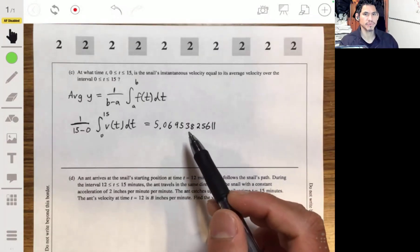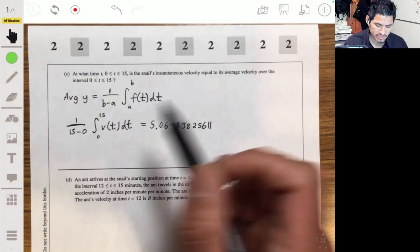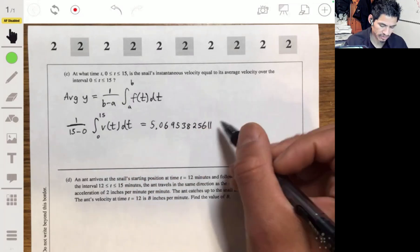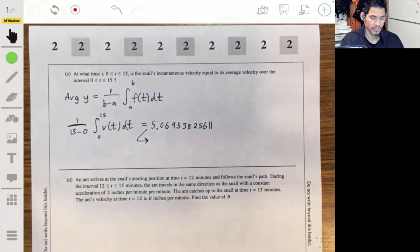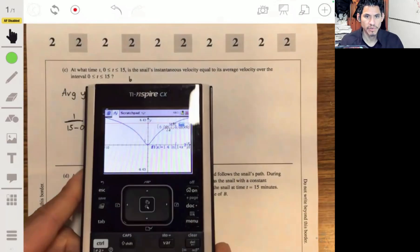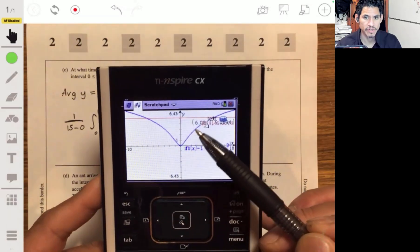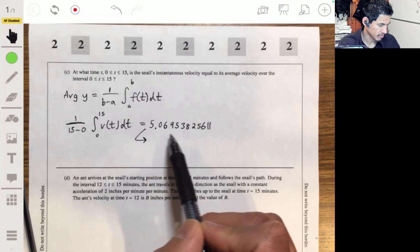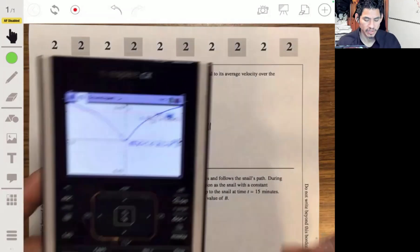Now we have to see when this is equal to the instantaneous velocity, and the instantaneous velocity is just the v(t) function. So we want to see when is this equal to v(t). What I do is just graph both of them. So I graphed both, the blue is the v(t) function, and the red line is just this equation, the 5.06.